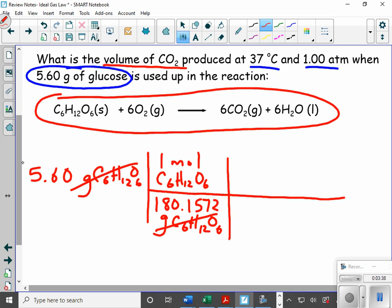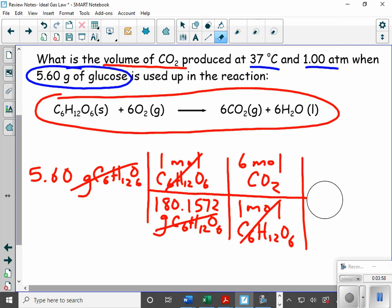Now I'm going to go to my balanced chemical equation, and I'm going to convert from moles of glucose to moles of carbon dioxide using my molar ratio. Now I have converted this into moles of CO2. When I did my math and rounded it to three sig figs, I got 0.187 moles of CO2.